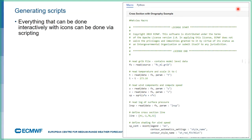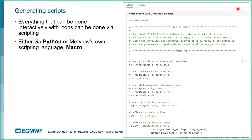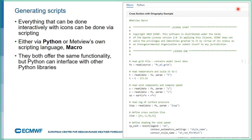Everything you can do with icons you can also do with scripts. The icons tell you exactly what options are available. You can use Python for scripting or Metview's built-in language, Macro — they basically offer the same functionality. If you use Python, you can import other Python libraries and interact with them as well. Scripting gives you much more flexibility than the user interface, and in the post-processing webinar that Shandra will give, you'll also see what other functionality you get with scripting.